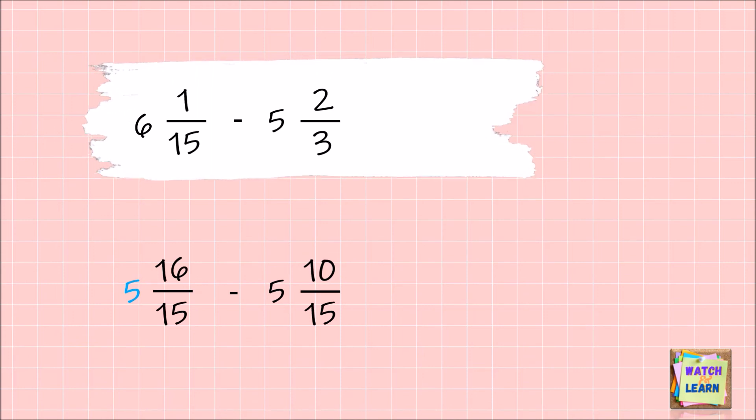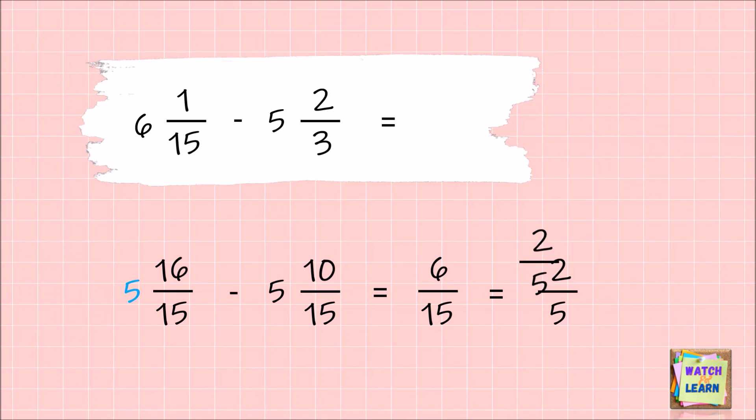5 - 5 is 0, and 16/15 - 10/15 is 6/15. Again, always reduce your answer to its lowest term. Thus, the final answer is 2/5.